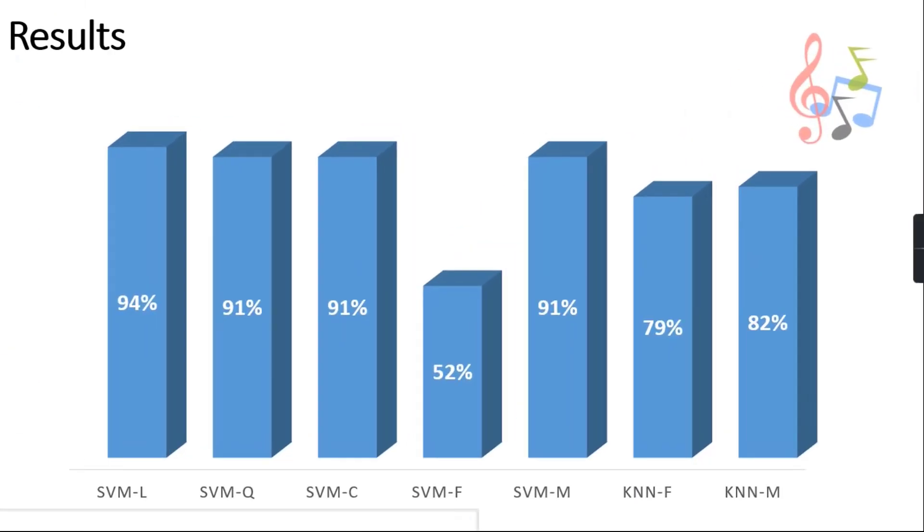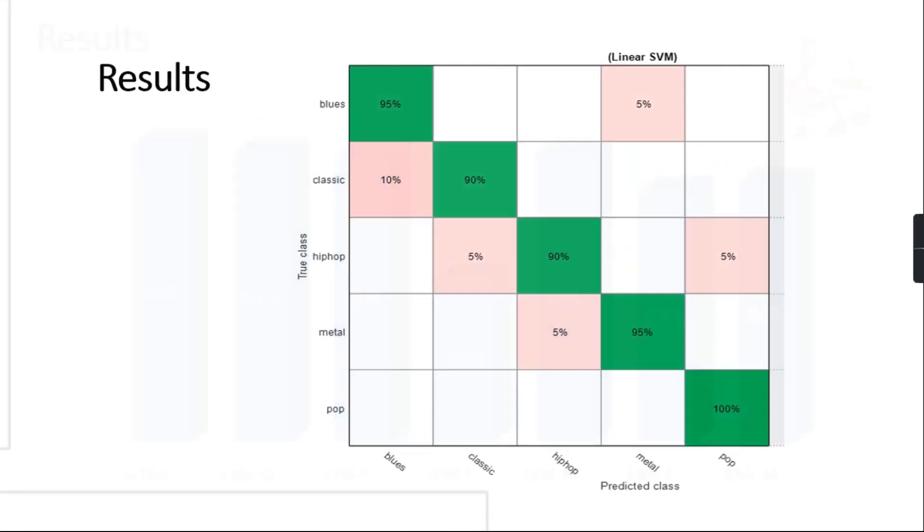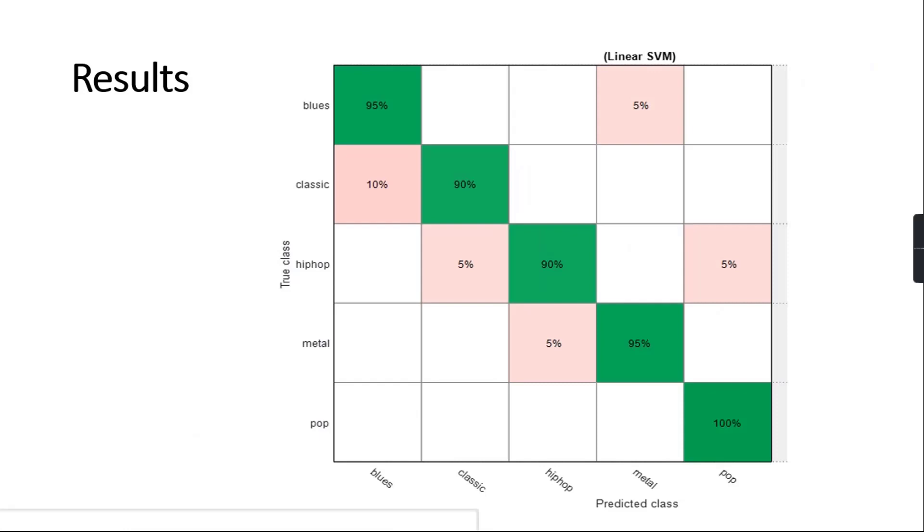Here is a bar chart showing different accuracies using different classifiers. SVM linear results the best performance with an accuracy of 94%. Classified accuracy in terms of confusion metric can be seen in this slide.